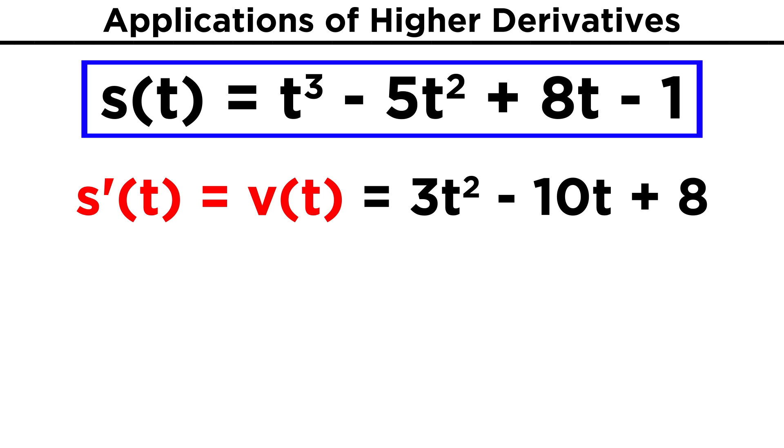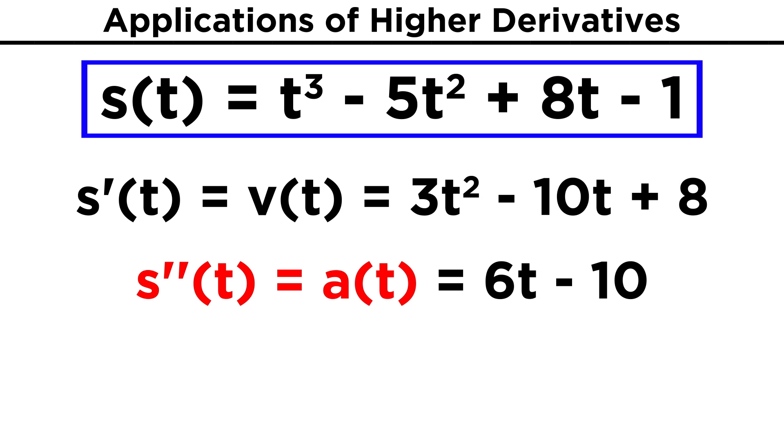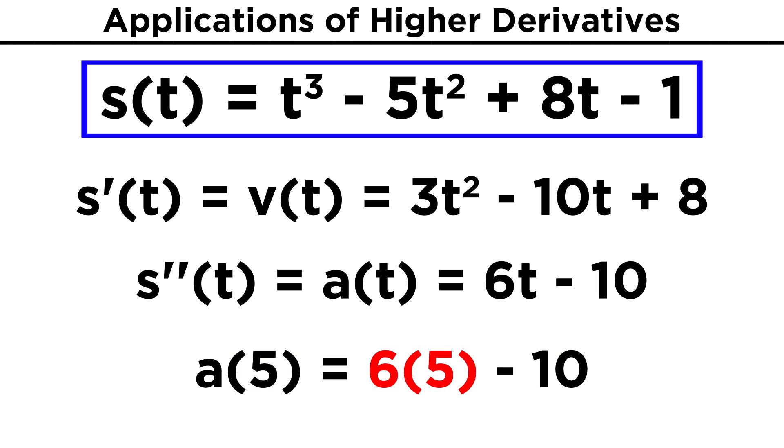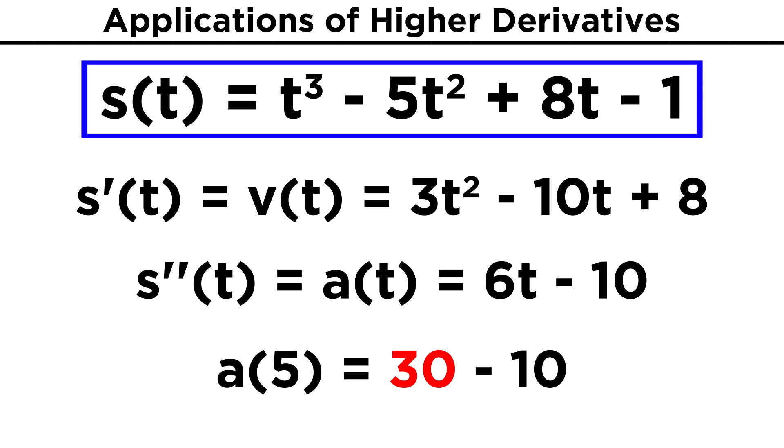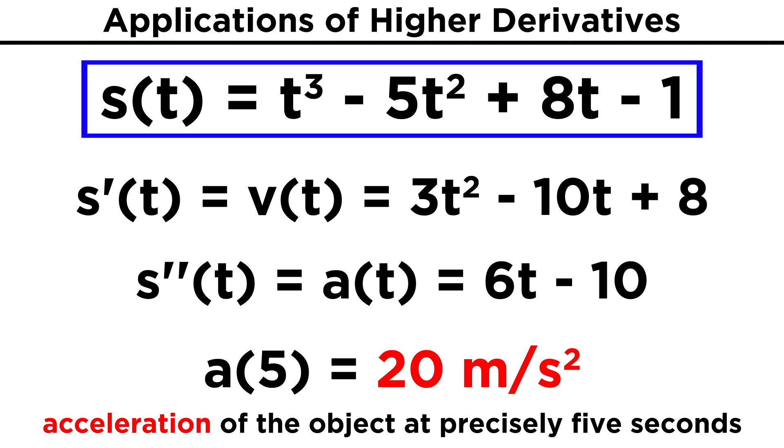The first derivative, V of t, will be 3t squared minus 10t plus 8. Then the second derivative, A of t, must be 6t minus 10. Since this represents the acceleration at any time t, then to find the acceleration at precisely five seconds, we just plug in five. A of five will be 6 times 5, or 30, minus 10, which is 20 meters per second squared.